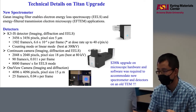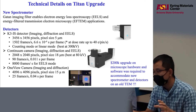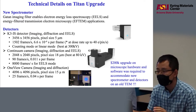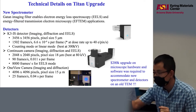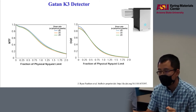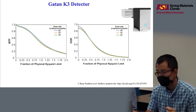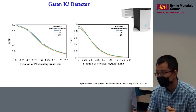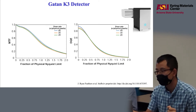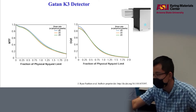Most users will be using the OneView camera. However, we needed to upgrade the microscope itself to allow the installation of these new instruments. Here is the K3 detector plot showing the modulation transfer function versus the Nyquist limit and also the DQE curve. They are very good at low frequencies, but can go down to 0.2 at one Nyquist limit.